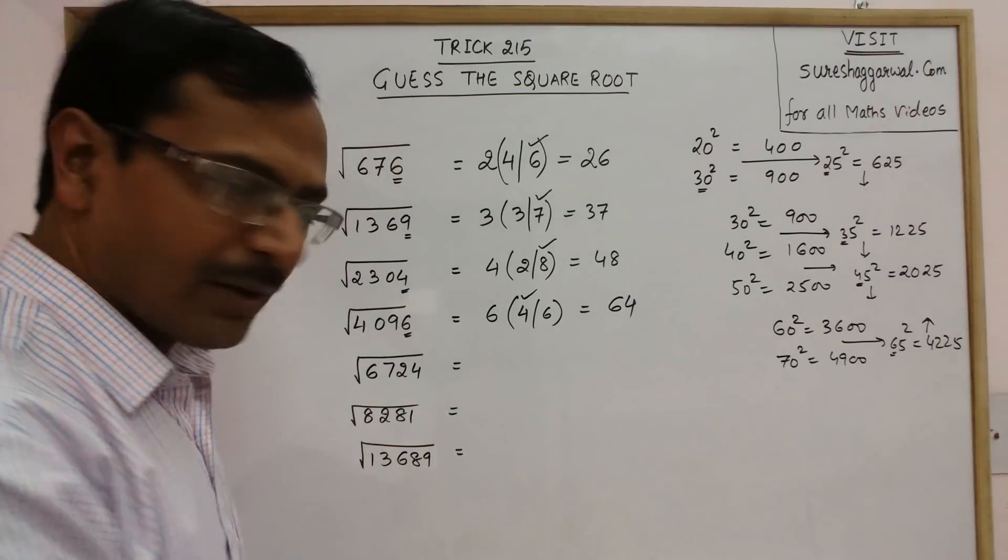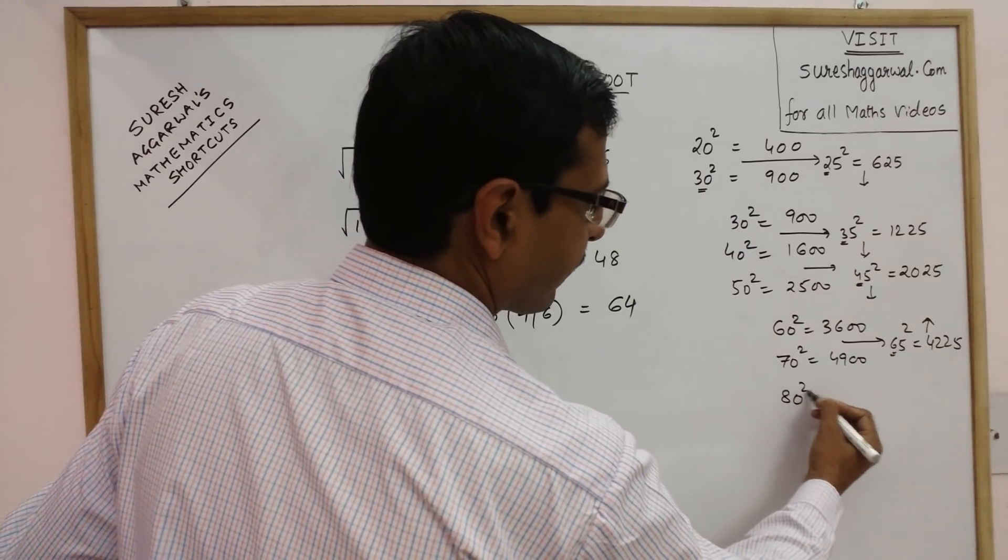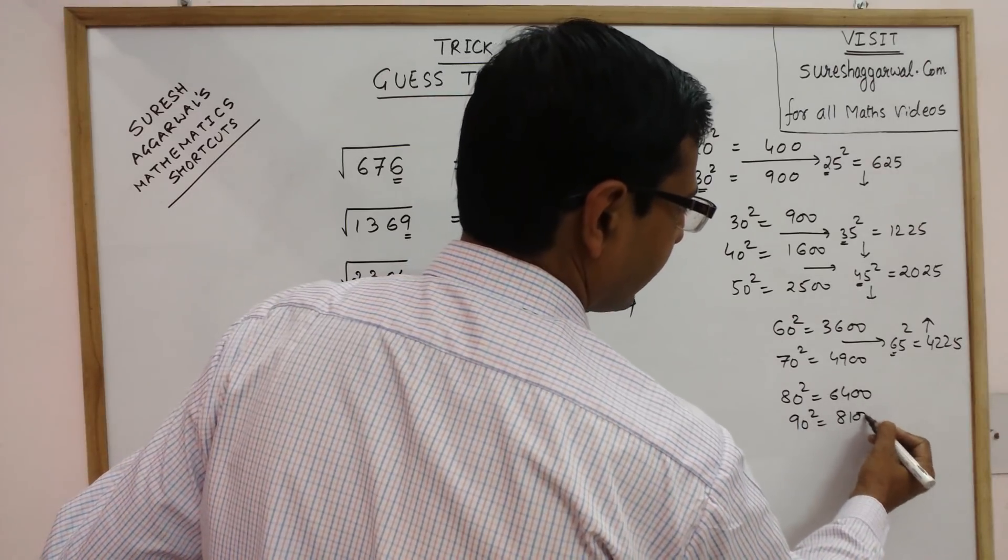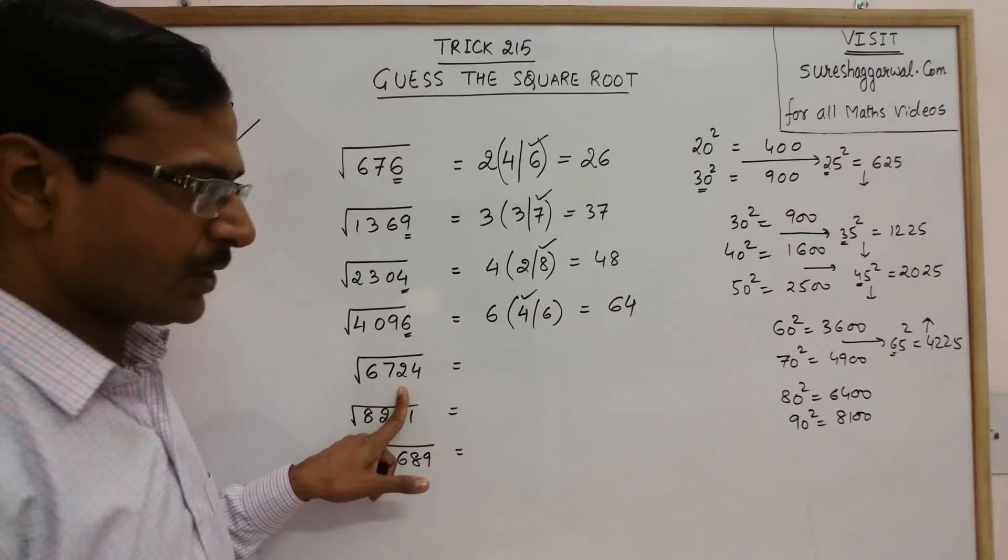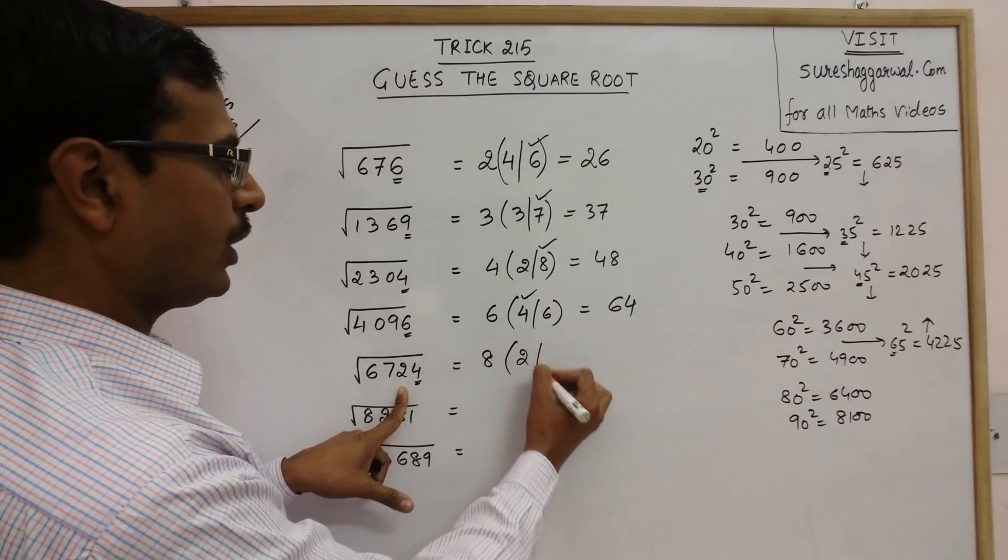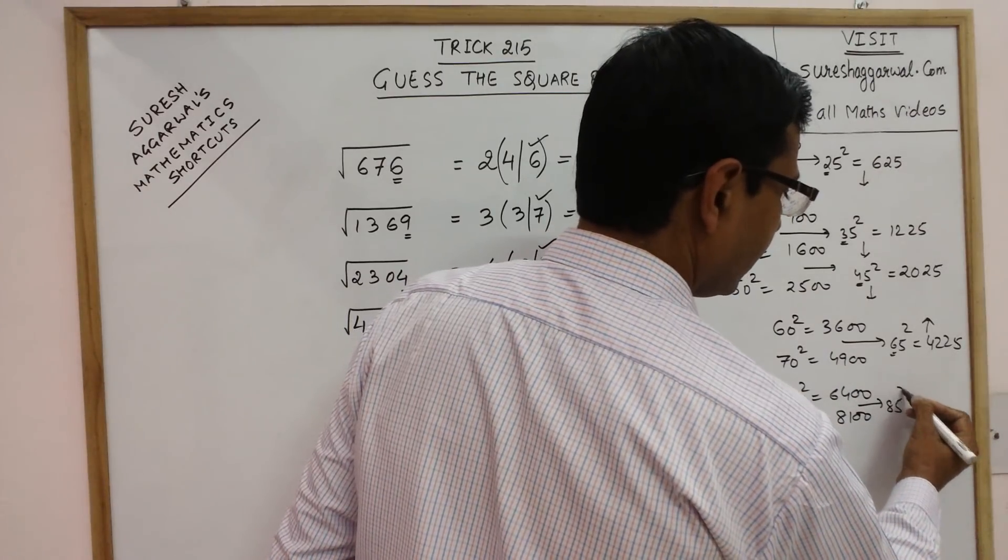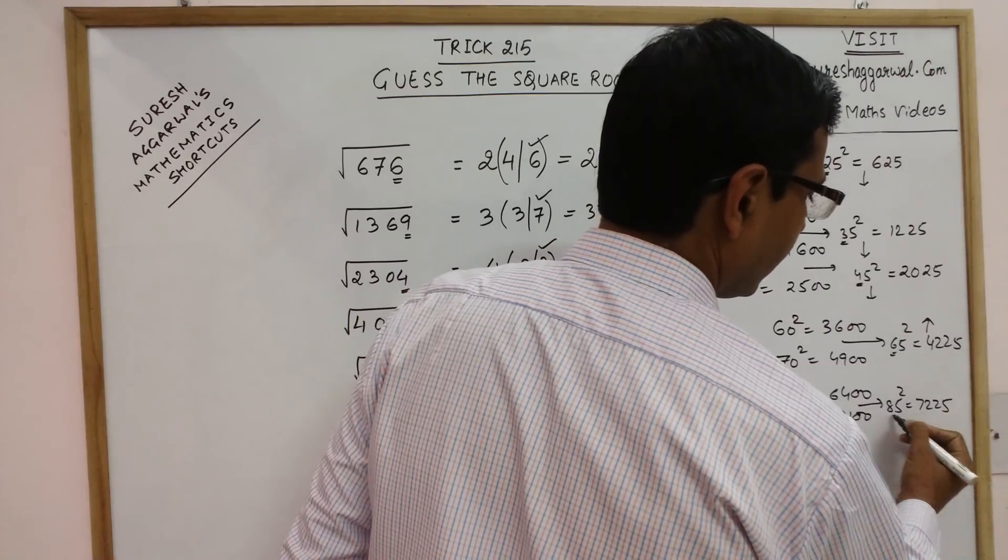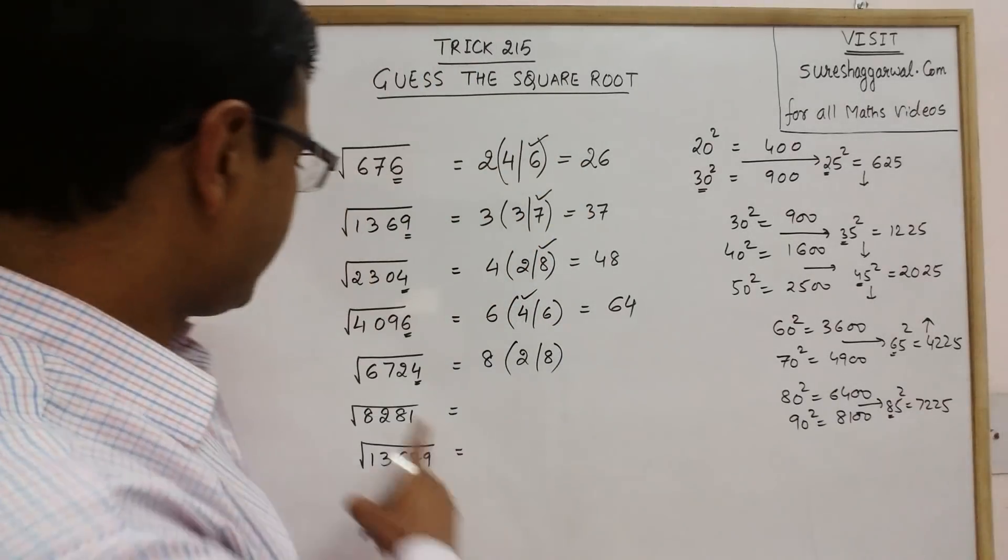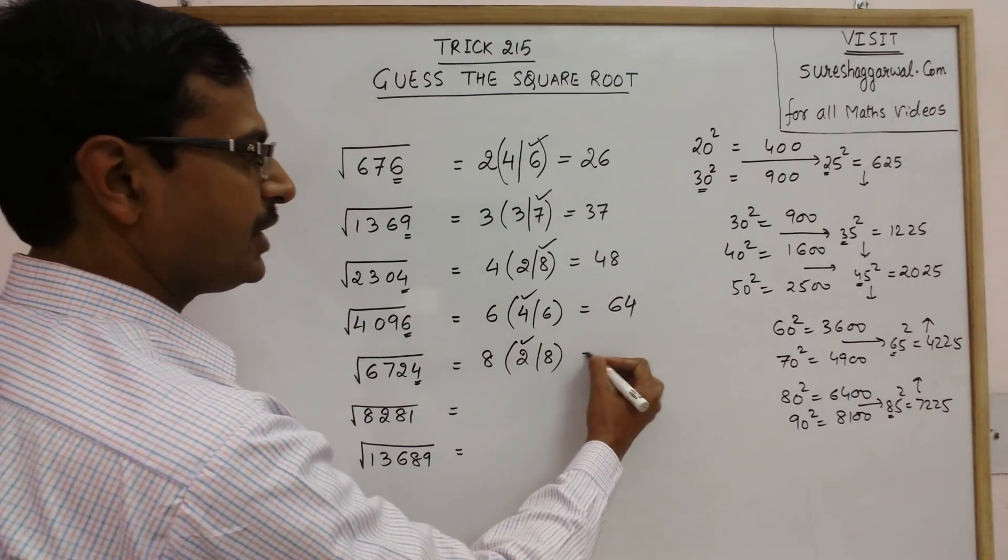Likewise you can solve a number of problems now. See 80 square is 6400 and 90 square is 8100. 6724. So 8 to 90, 8. Unit digit is 4, so either 2 or 8. Now check 85. 7225 because 8, 8, 9 is 72 and followed by 25. Now see this number is smaller. So our answer will be below 85. Below 85 here is 82.